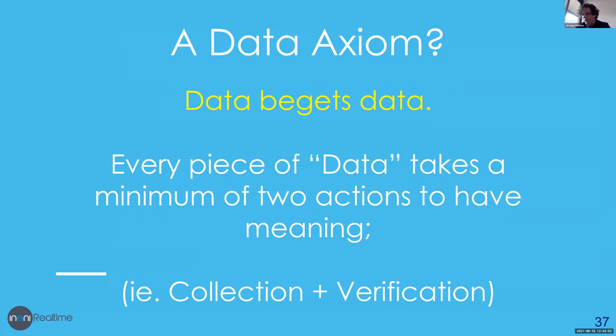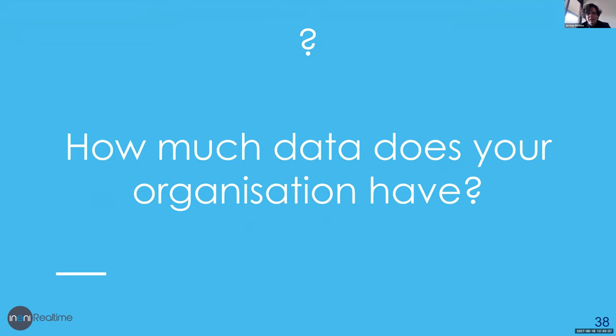This leads me to what I call a data axiom. We have to think about what is the core meaning of all the data we're using. What I've found is: data begets data. Those emails — one email begets another email begets another email. Boiled down, it comes to a really simple axiom: every piece of data takes a minimum of two actions to have meaning, such as collection and verification. If you want another person to see your data, you've got to store it and they've got to collect and verify it — up to five actions.